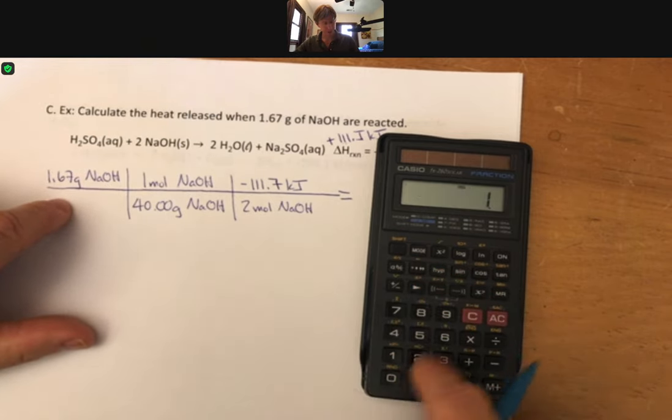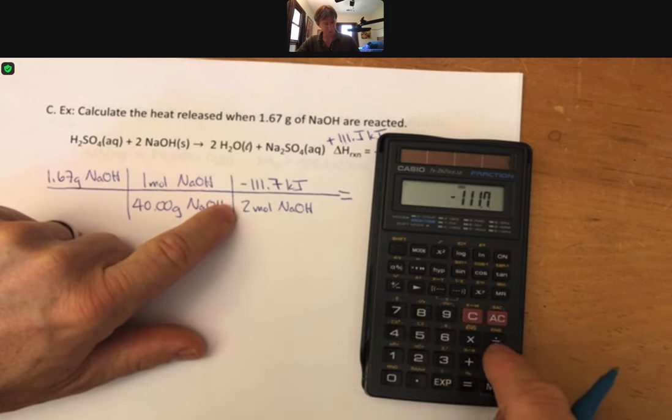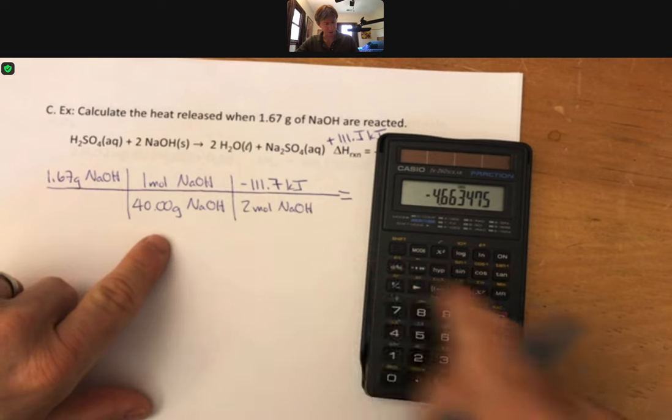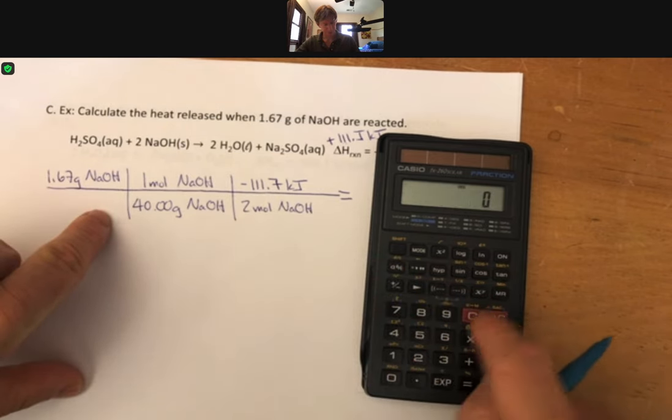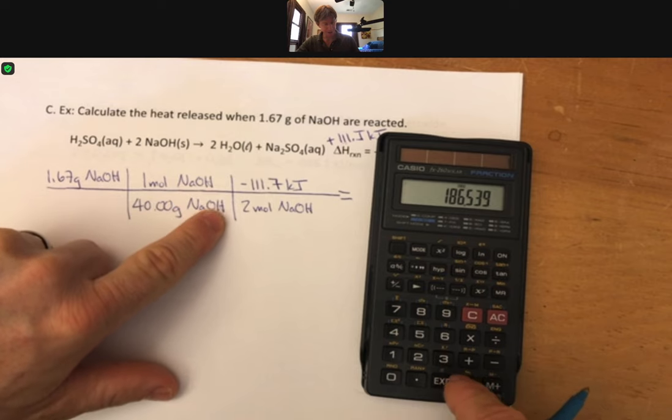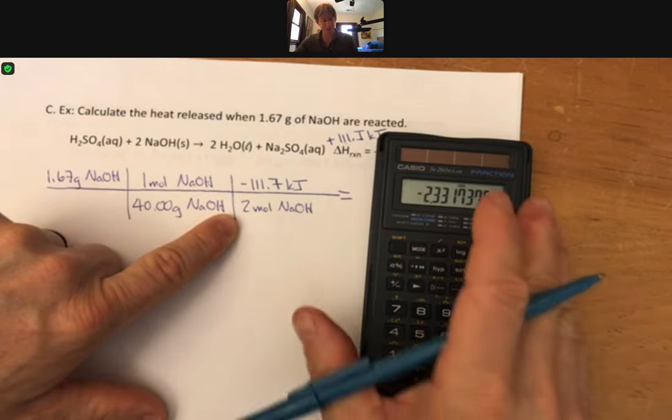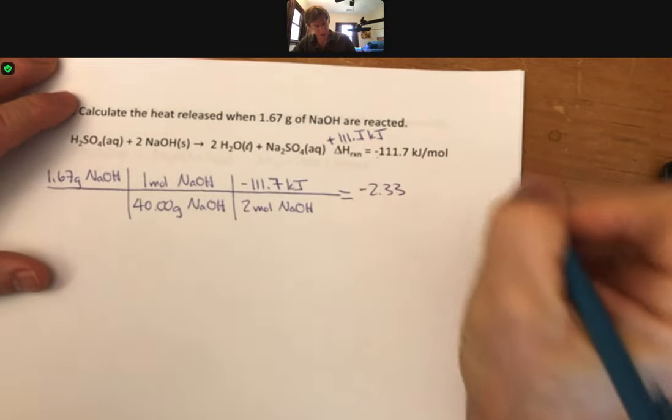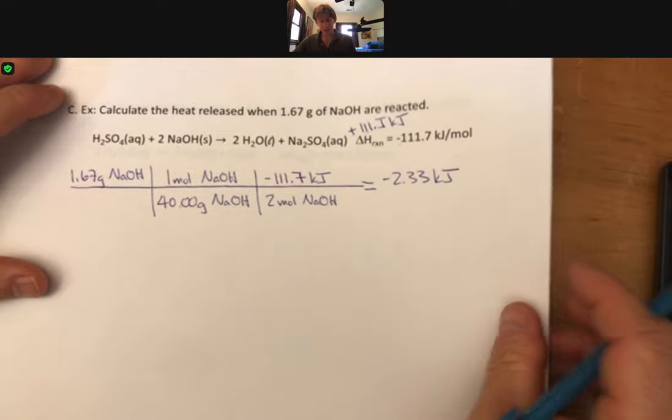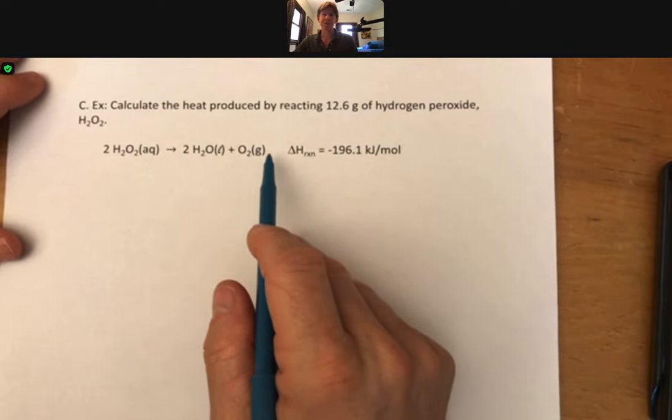Let's try that again. 1.67 divided by 40 times 111.7 negative divided by two. That should have a minus sign in front of it. So it's minus 2.33 kilojoules as my final units. And it's exothermic, so that energy is released. I'm going to allow you to work this problem on your own, and I'll check your answers when I go through your lecture outline.